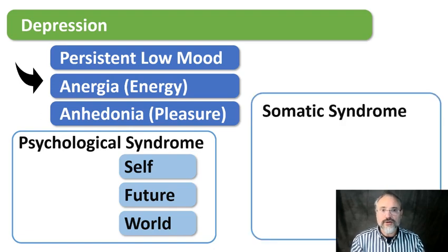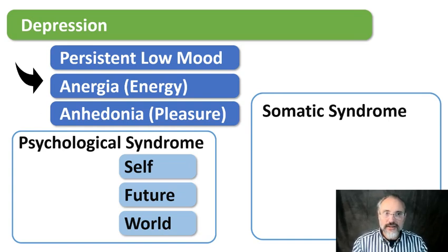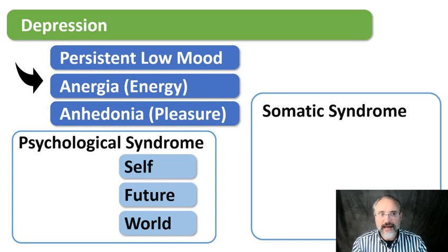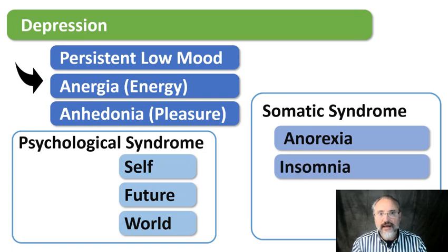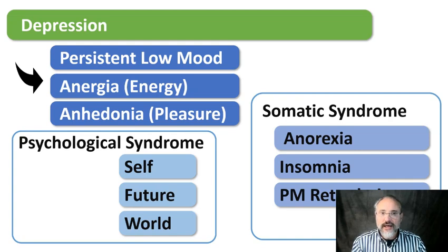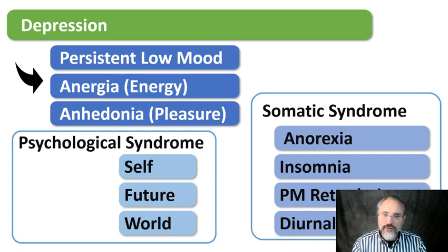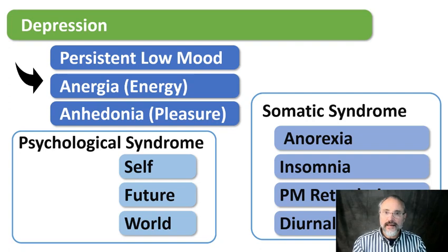There's a separate syndrome called the somatic syndrome of depression — a collection of symptoms mainly to do with the body. These are not psychological; they're to do with the way your body reacts. They include loss of appetite, loss of sleep — particularly in the early hours — psychomotor retardation, where people become more slow and sluggish, and a diurnal variation of mood, tending to be particularly low in the mornings and slightly better in the evenings. To diagnose depression, you need two of the three core symptoms plus either the psychological or somatic syndrome.